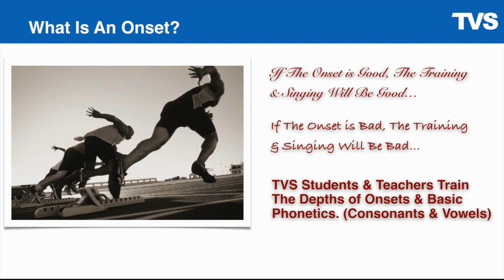Another example — probably the first one you'll learn — is called the track and release onset. The track and release onset is unique because it starts with nasals. In that example, I started with an M and an N. M and N sit in a family of consonants called the nasals. This is what I mean when referring to the phonetics and consonants and vowels on this slide.